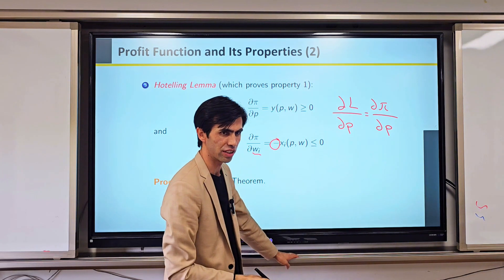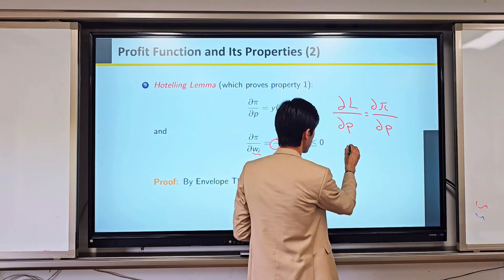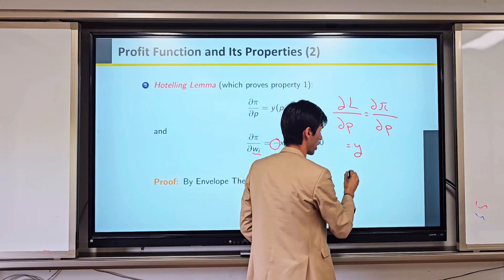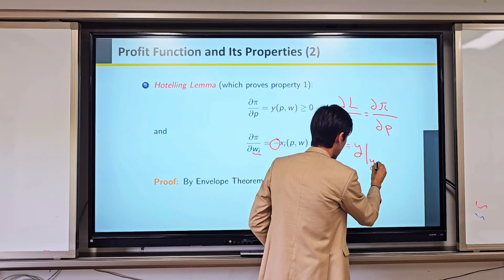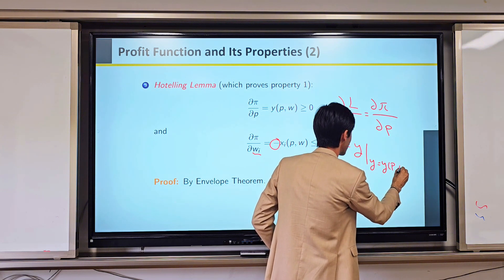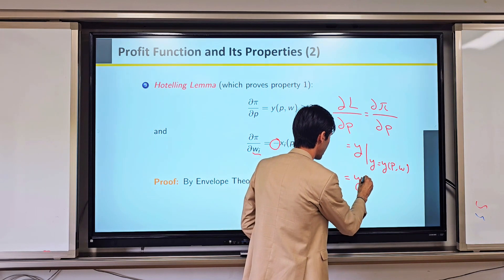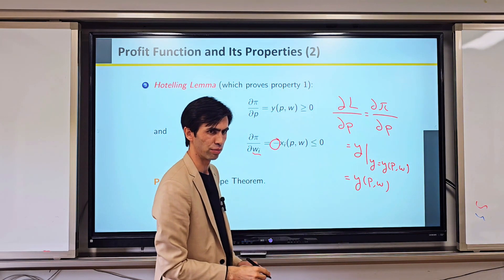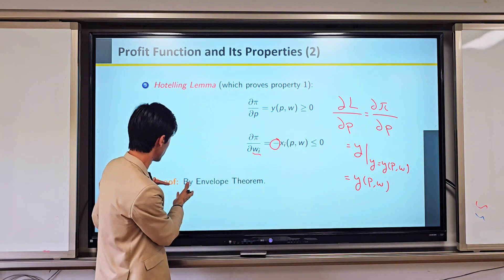When we get the partial derivative of profit with respect to price, it will give us some value of Y such that Y is equal to some function of P and W. Finally, we get Y as a function of P and W — output price and input price — and this is by the envelope theorem.